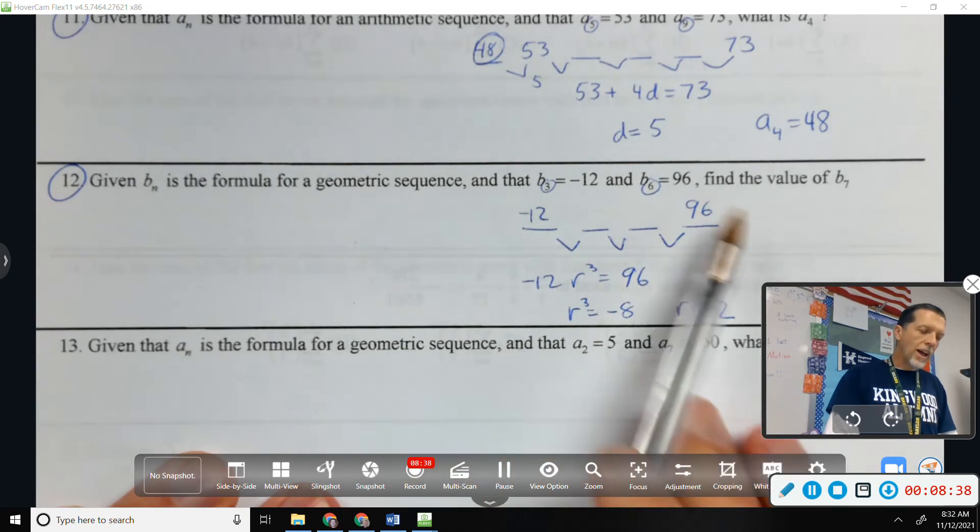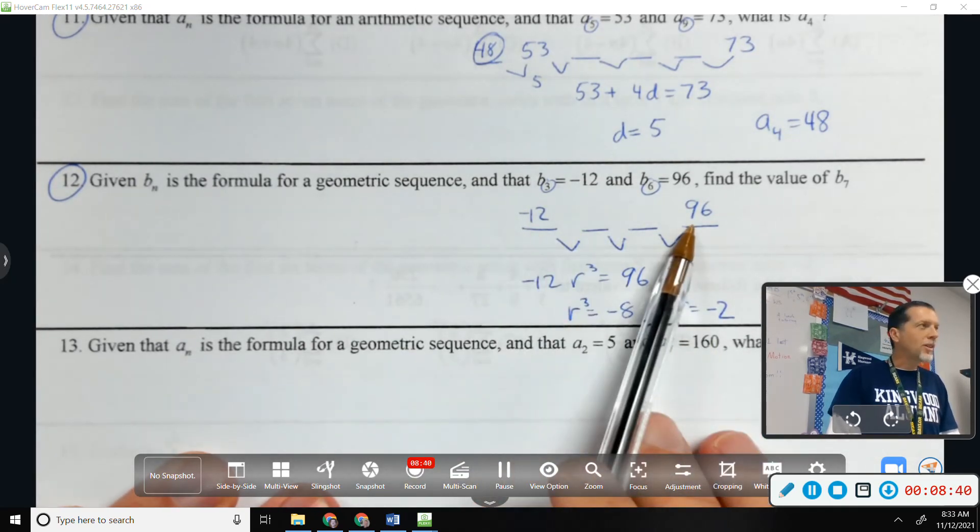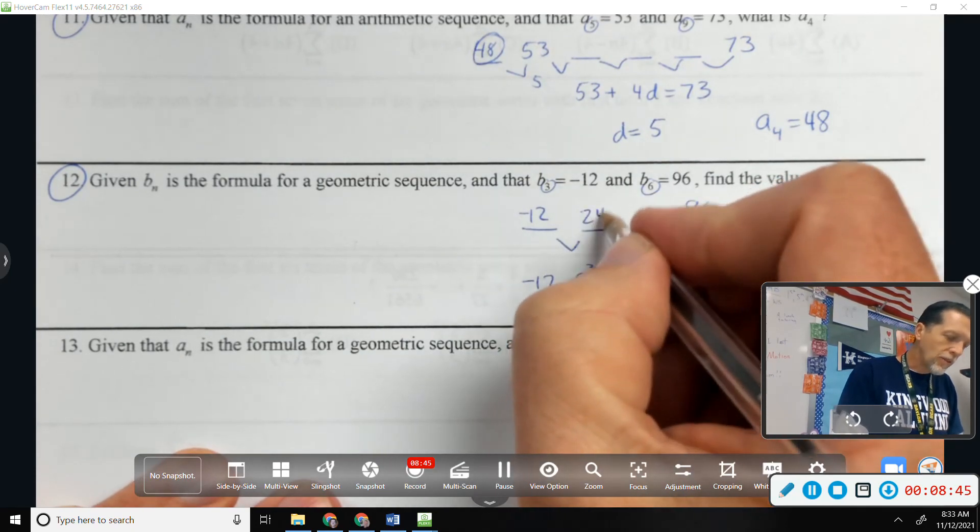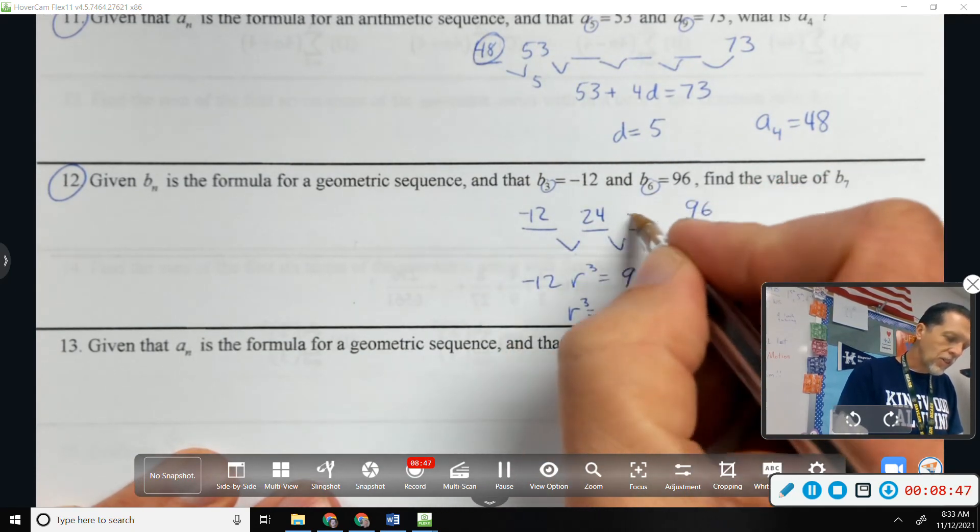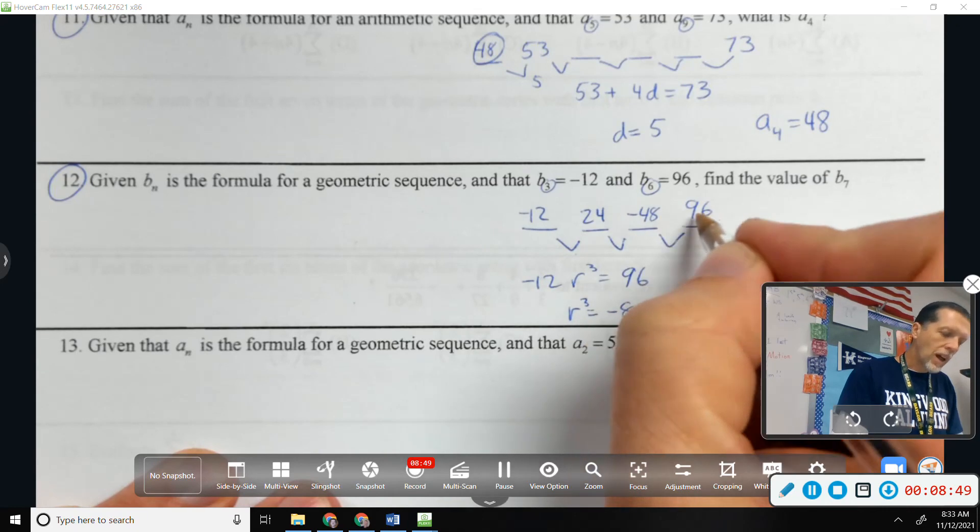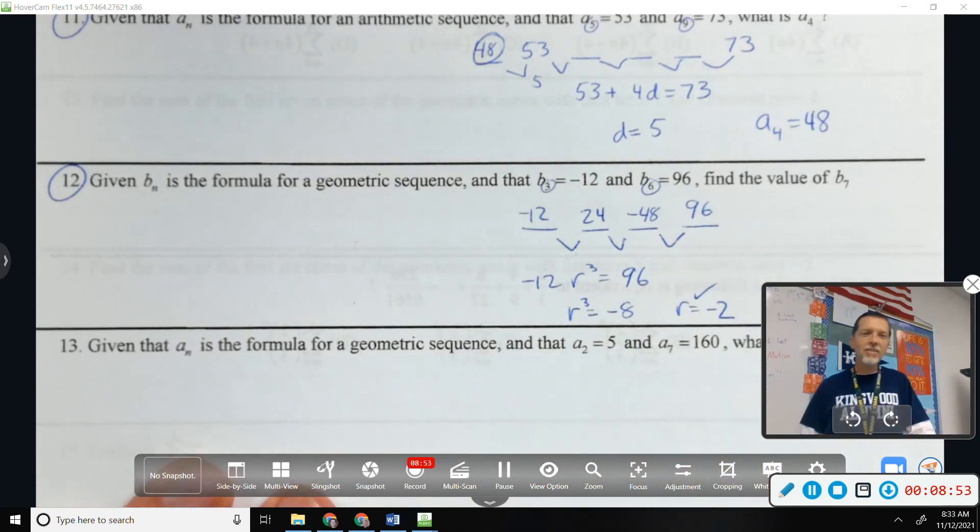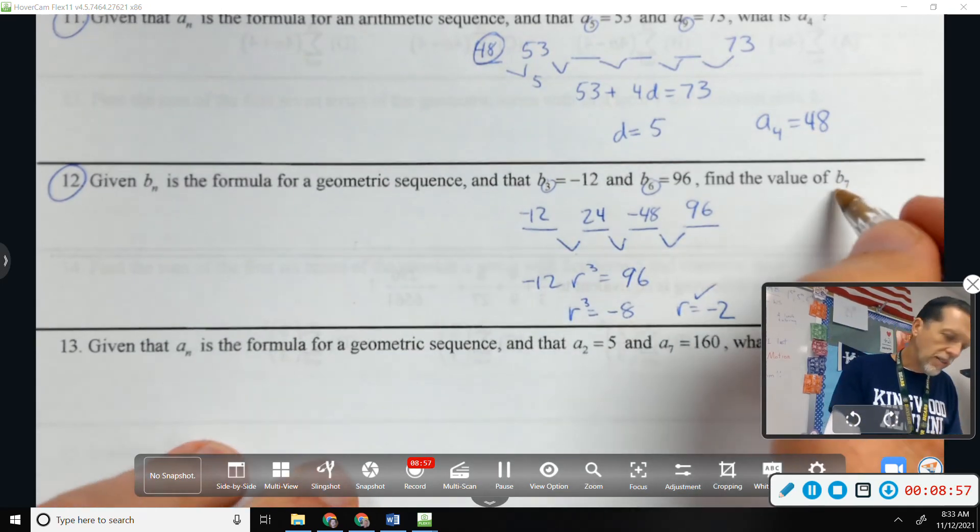We didn't do this on the last one, but if you fill in the blanks, you can sort of check. Not sort of, you can check. If I multiply by negative 2, I get 24 times negative 2 is negative 48 times negative 2 is 96. I feel really good about r being negative 2.